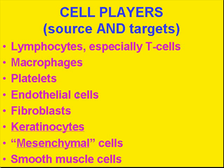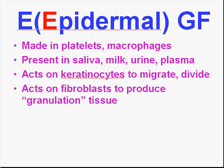Because there's a wide variety of them that were discovered, sometimes there'll be alphas, betas, ones, twos — you could guess there's a gazillion of them. Epidermal growth factor is made by platelets and macrophages to cause keratinocytes in the skin to migrate and divide. They also act on fibroblasts to produce granulation tissue. So even though we called it epidermal growth factor — because that's how it was discovered first — it can also act on mesenchymal or stromal cells called fibroblasts to proliferate as well.